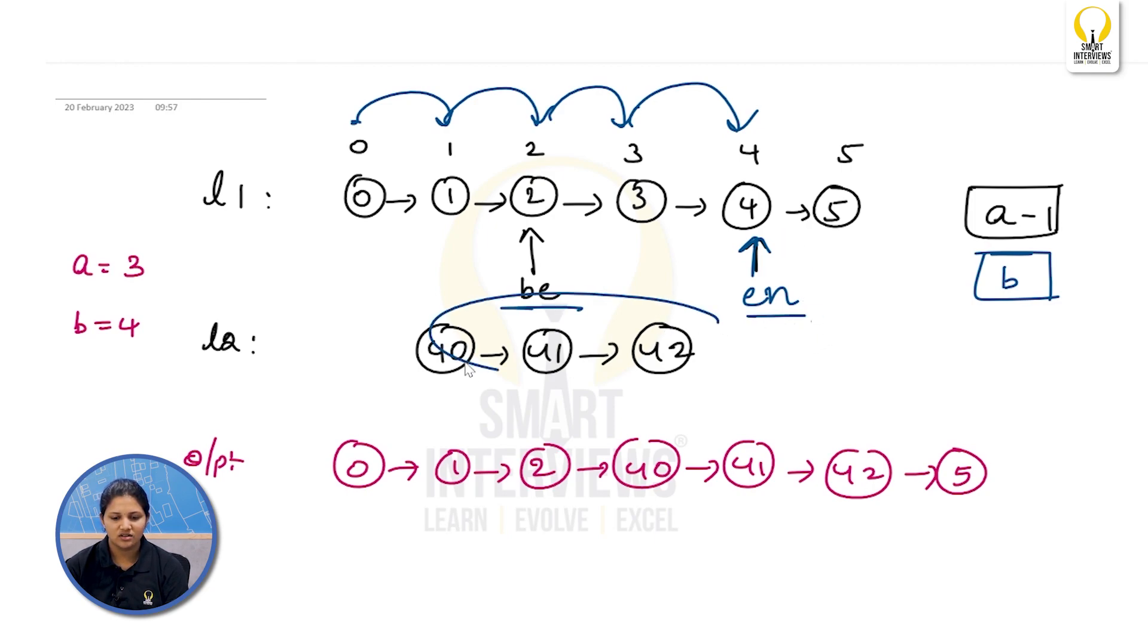Once you have these two things, can you tell me how to insert this part? First thing is simple, right? Once you stop at this beginning 2, you can directly say 2.next equals to 40. This will remove this connection and also it will be attached. If you see your output, you have 0, 1, 2 and 40. That is fine.